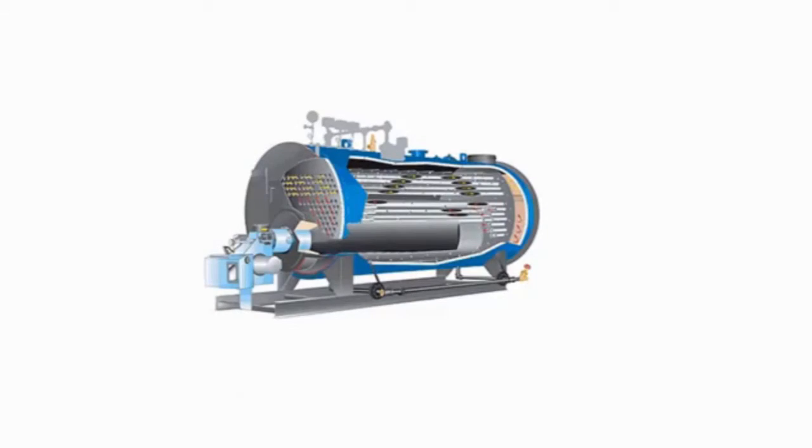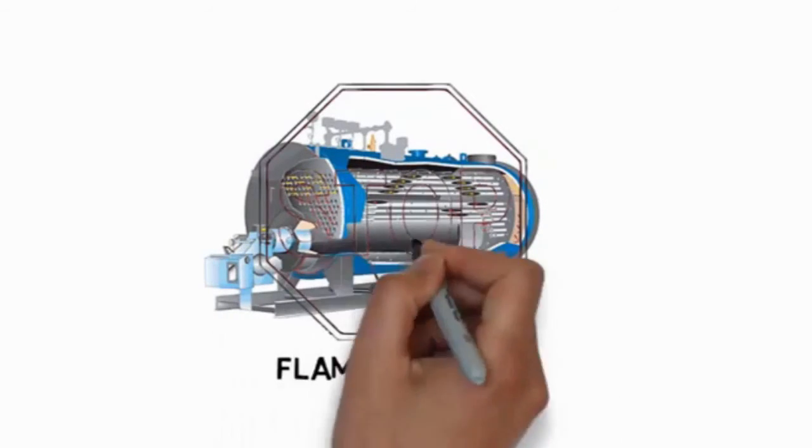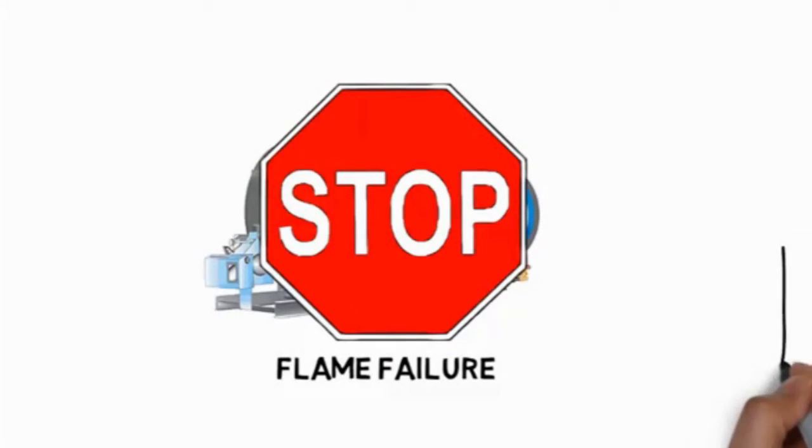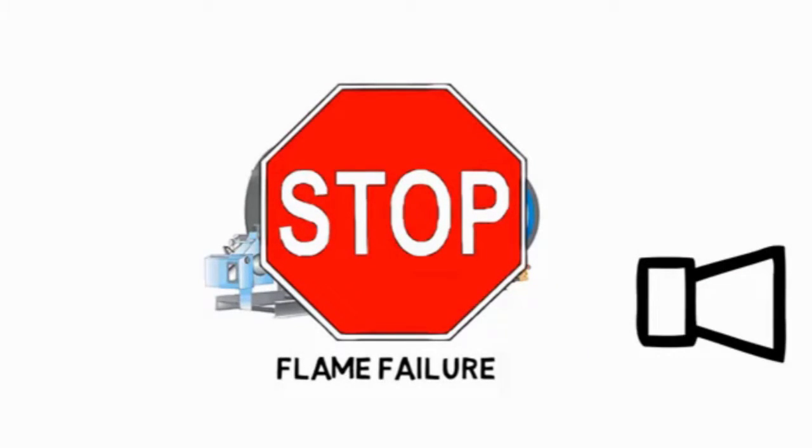If there is a flame loss or inability to maintain a stable flame after the flame establishment period has elapsed, a lockout will occur. The alarm relay is used to enunciate a lockout condition.